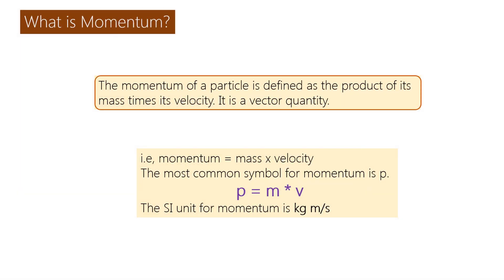What is momentum? The momentum of a particle is defined as the product of its mass times its velocity. It is a vector quantity.